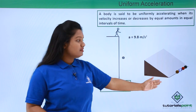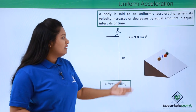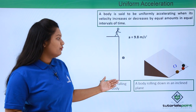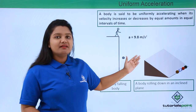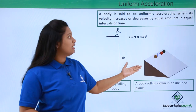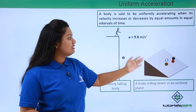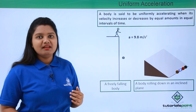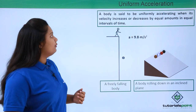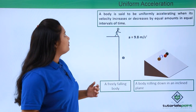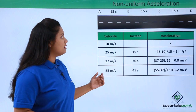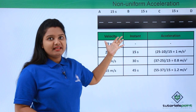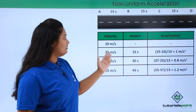Another example is the motion of balls and discs rolling from the top of an inclined plane to the ground. This kind of motion is also said to be uniformly accelerated.